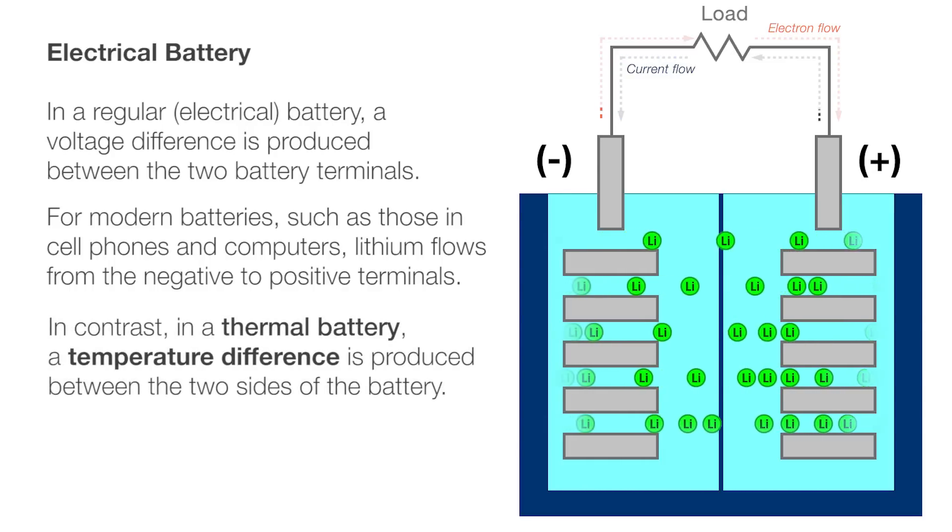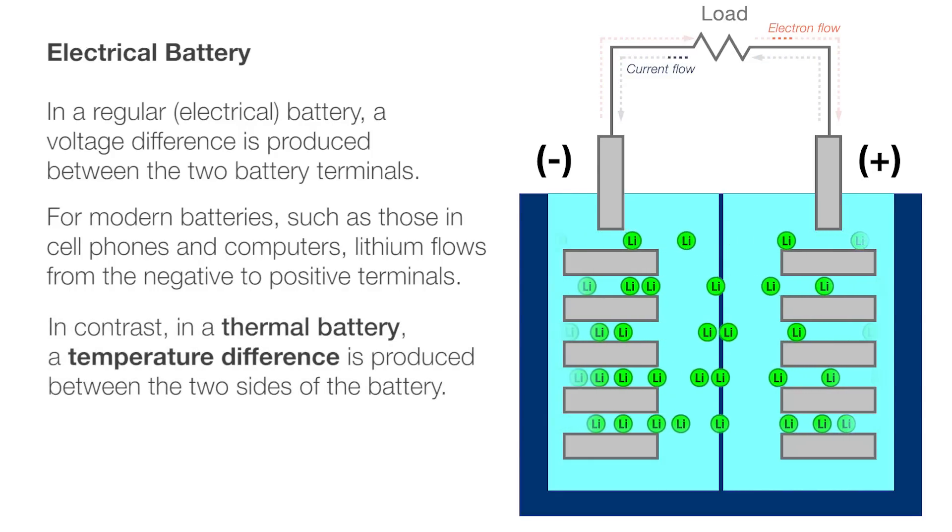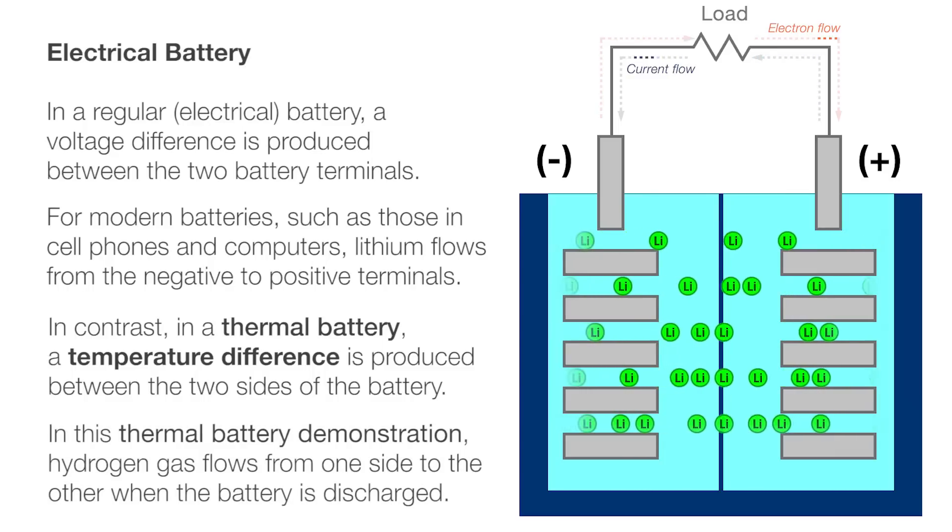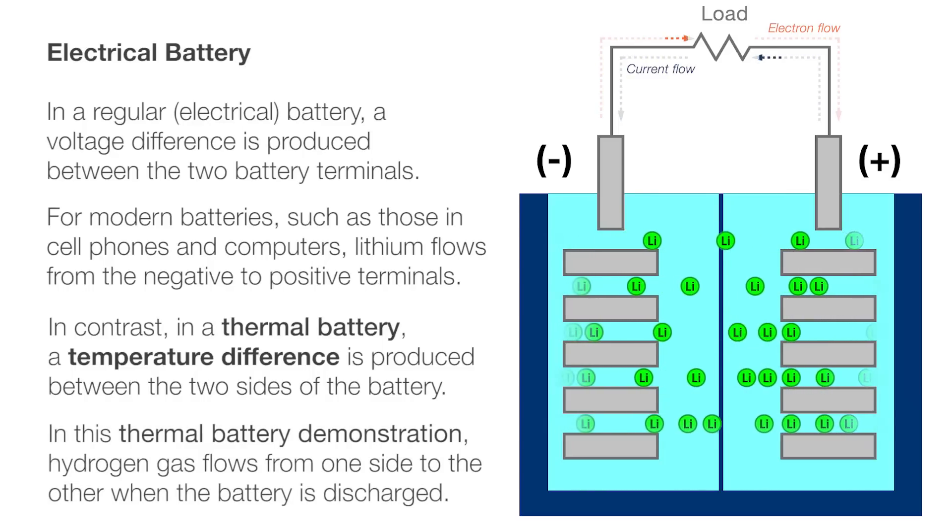In contrast, in a thermal battery, a temperature difference is produced between the two sides of the battery. In this thermal battery demonstration, hydrogen gas flows from one side to the other when the battery is discharged.